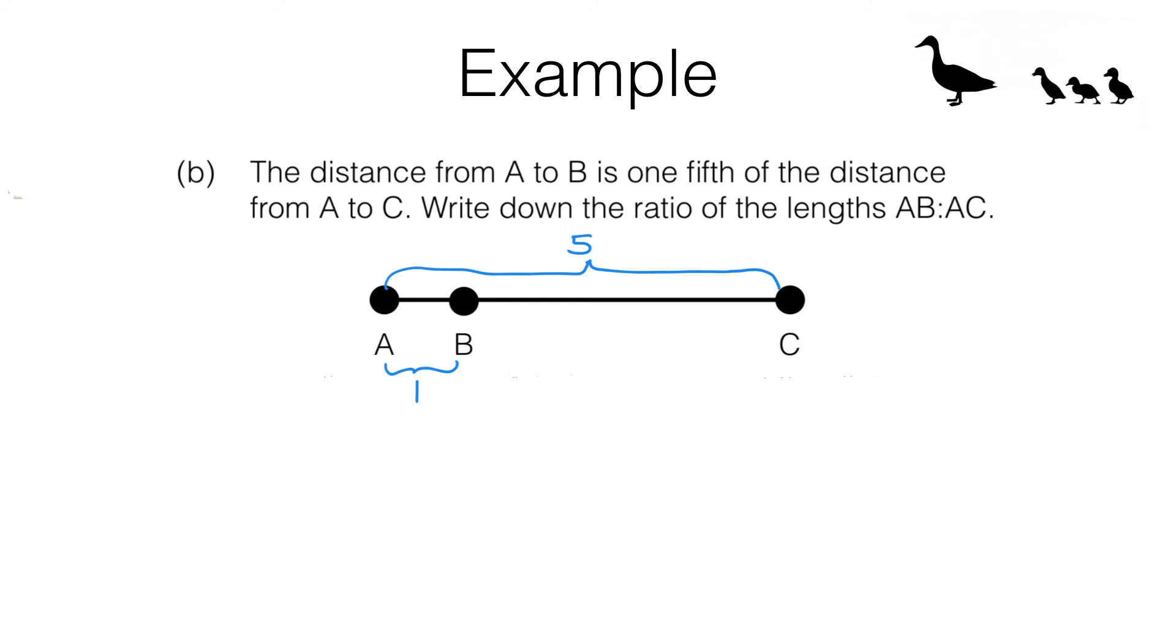So what is the ratio? Well we can see the ratio of AB to AC is one to five. So there is our answer. Now let's have a quick bonus question before we end the video. Pause the video and have a go at that bonus.